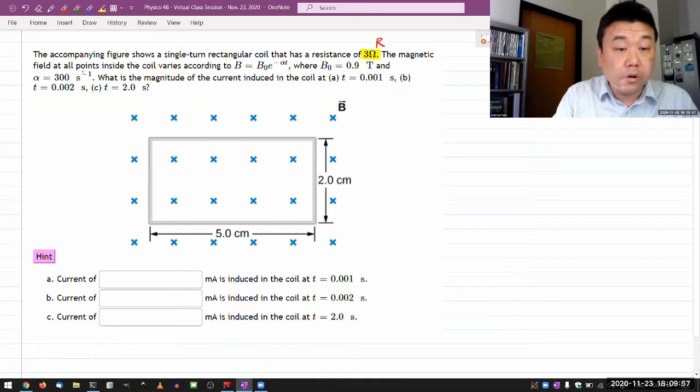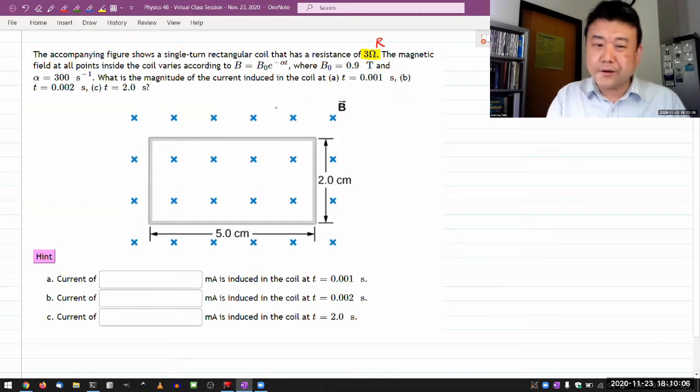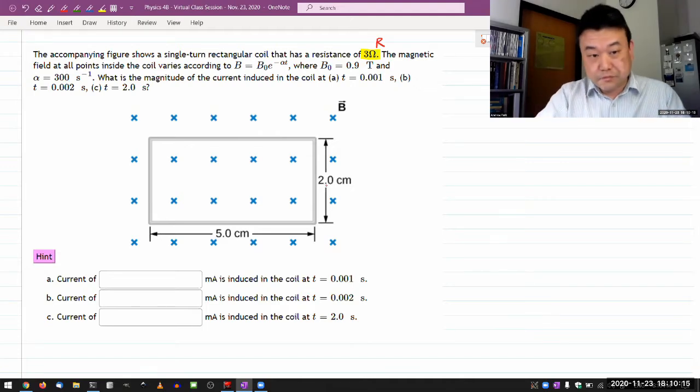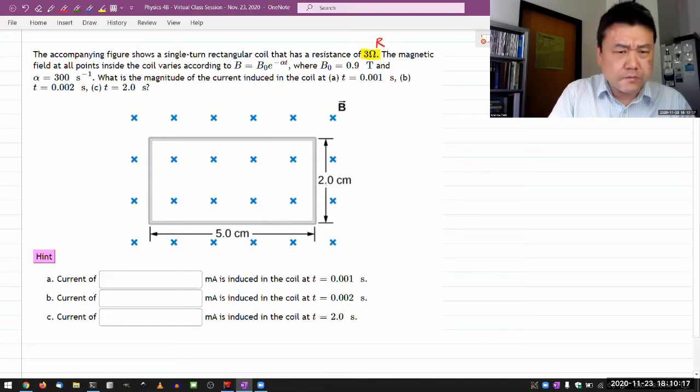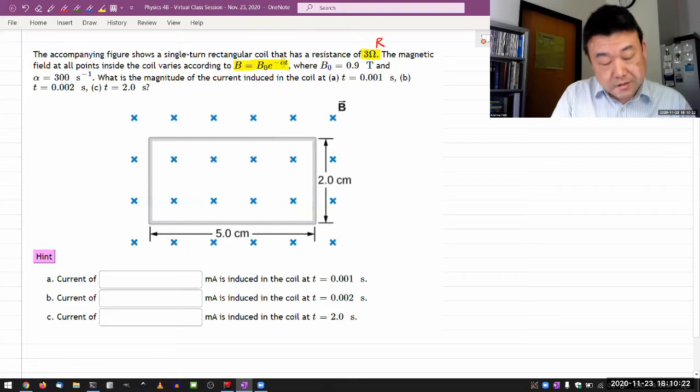The magnetic field at all points inside the coil varies according to, so it doesn't say it's a uniform magnetic field, but I'm going to assume it because it appears uniform. I have a magnetic field going into the screen and it looks uniform. But it's a time-varying magnetic field, which is necessary to induce voltage according to Faraday's law. They give you the numbers for these parameters.